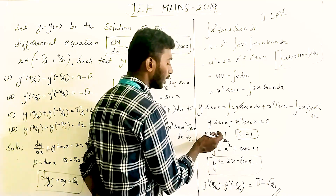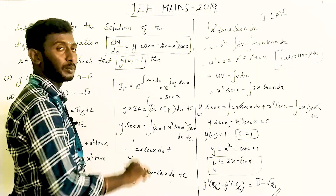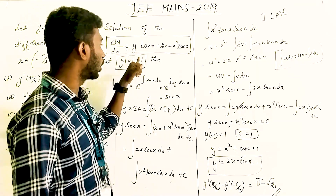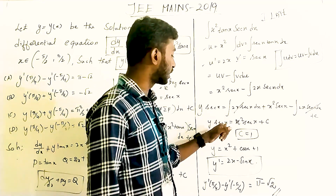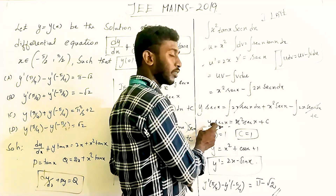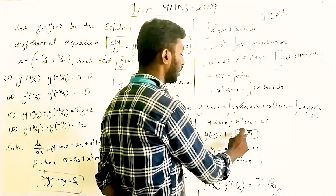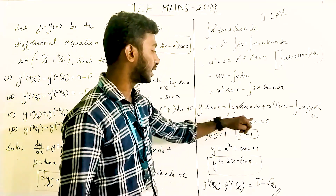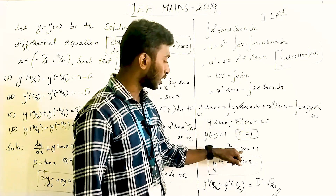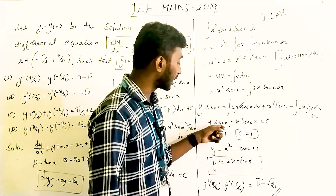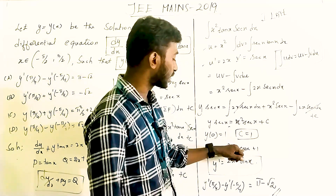Dividing both sides by sec x, y = x² + C·cos x. Applying the initial condition y(0) = 1: 1 = 0 + C·cos(0) = C, so C = 1. Therefore the solution is y = x² + cos x.